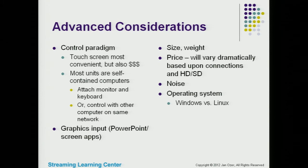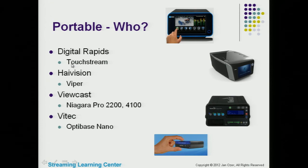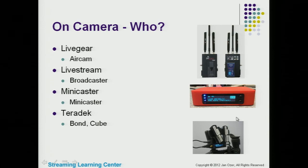This is the on-camera encoders category. When do you use a portable encoder that's on-camera versus the previous category? If you need battery operation — none of the portable appliances operate on a battery, but all the on-camera encoders do. If you don't have Ethernet or Wi-Fi and need a tool that can push a signal via 4G. And if you have to move the camera around — following someone at an award ceremony, for example.